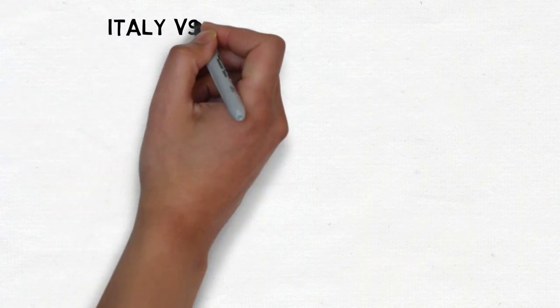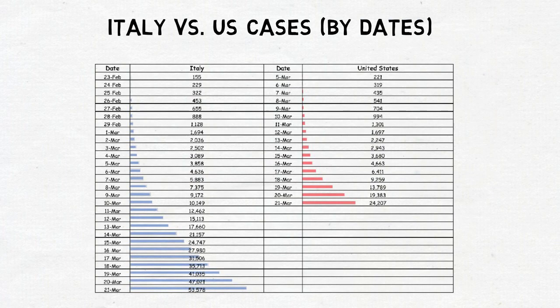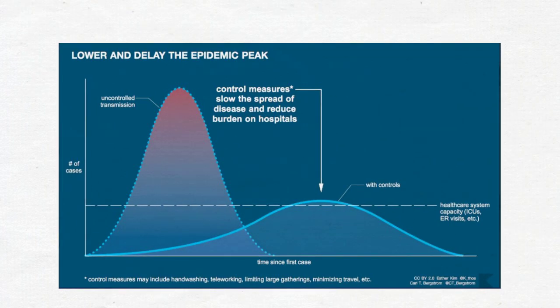As shown in this graph, we have been following a very similar curve with Italy, but with a two-week delay. We don't want to follow their curve. We don't want to peak like they did. We want to flatten the curve and let our numbers rise slowly and then start to decrease.